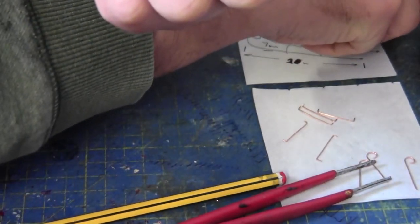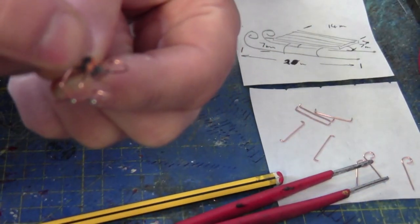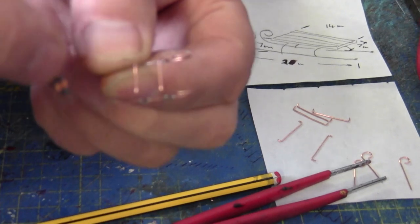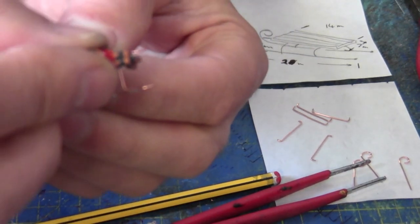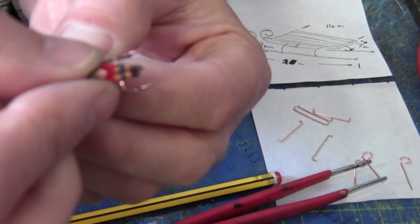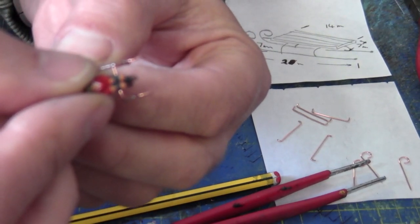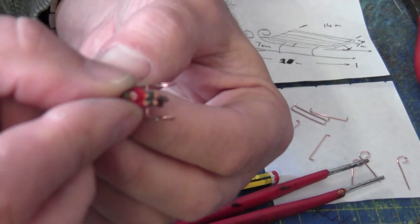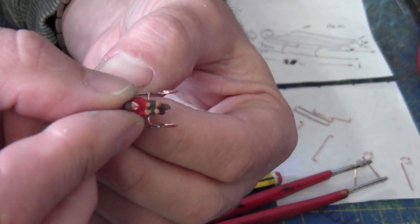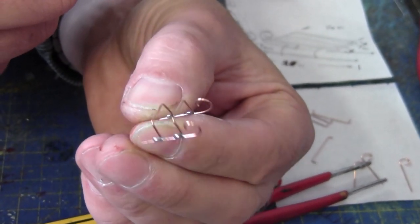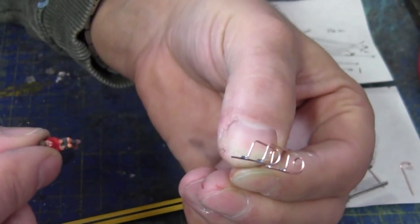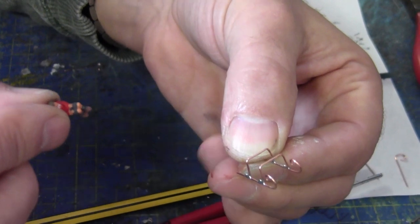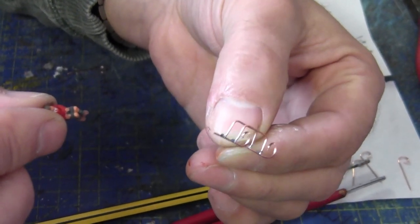So let's try the little character on there. If I can just hold them in place. Yeah, I think he'll sit on there. So that's my first attempt. So I shall make the others and then we'll start painting them up.